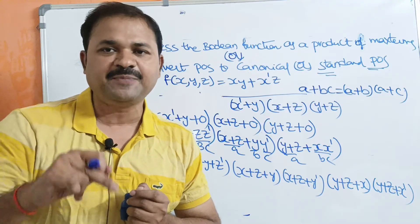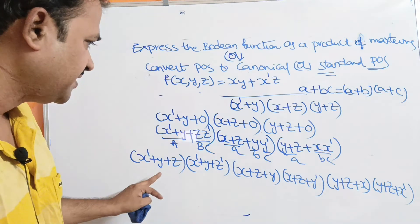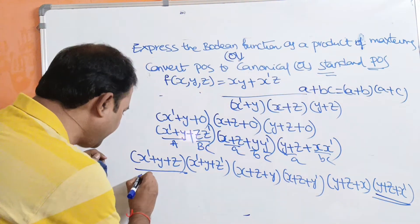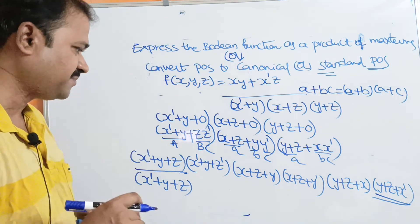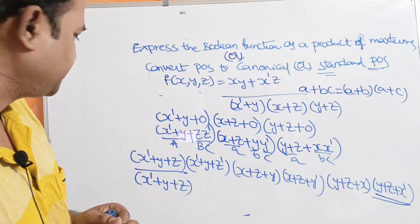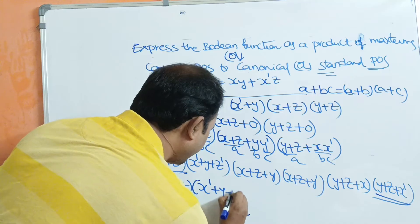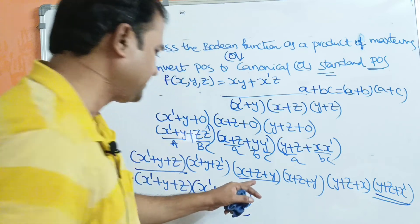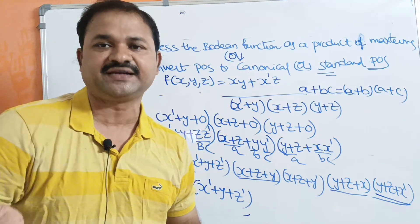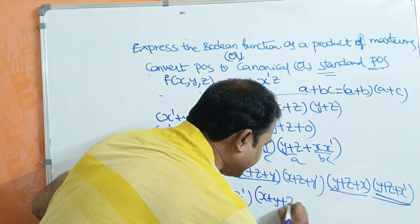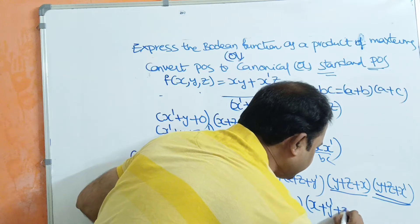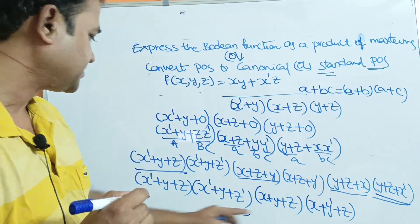Collecting all terms: (x' + y + z), (x' + y + z'), (x + y + z), (x + z + y'), (y + z + x), (y + z + x'). If any term repeats, we write it only once, because a + a = a. The term (x' + y + z) appears twice — write once. The term (x + y + z) appears as both (x + z + y) and (y + z + x) — write once. The remaining unique terms are (x' + y + z'), (x + y' + z), and (x' + y + z).